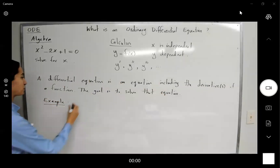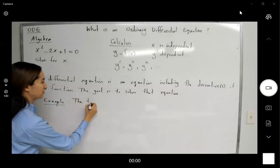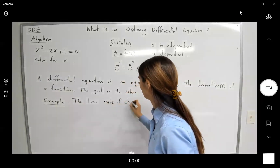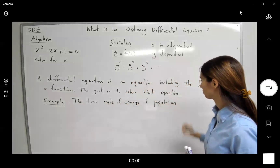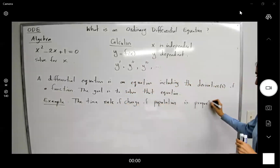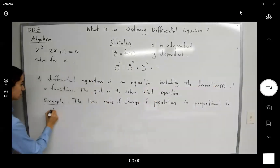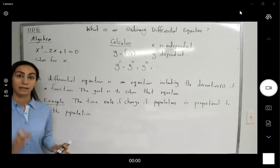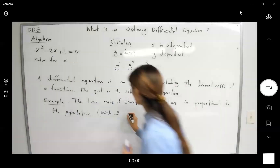Your friend mentions that the time rate of change of the population is proportional to the population itself. And in the case study, the birth and death rates are constant.